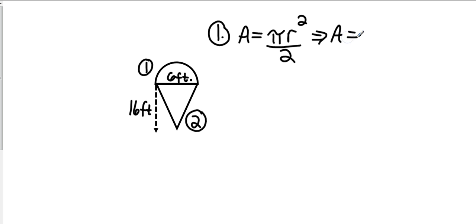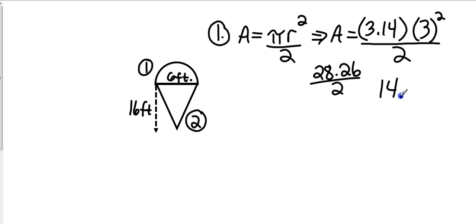So that's going to give me area equals 3.14 times, now 6 feet is a diameter so that means our radius is 3. So I'm going to take 3 and square it, and then take all of that and divide it by 2. That's going to give me 3.14 times 9. That gives me 28.26, then I'm going to divide that by 2 because it's a semi-circle, and that's going to give me 14.13 square feet.